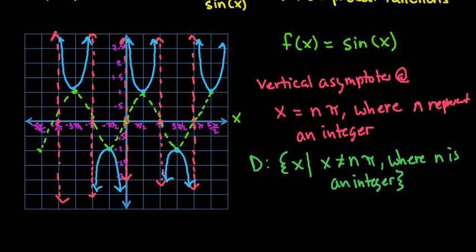And our range, remember this is our y coordinates. So remember that we're just looking at the blue. So the blue is everything from negative infinity to negative 1 and from positive 1 to positive infinity.